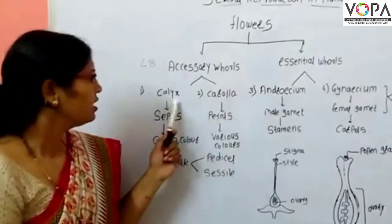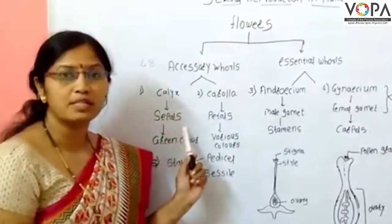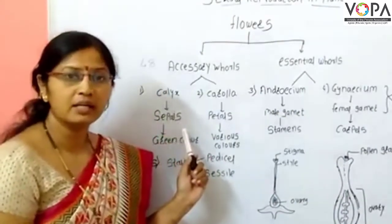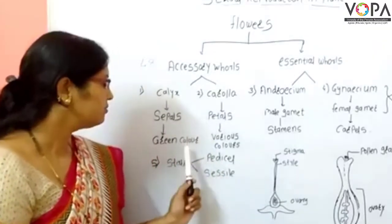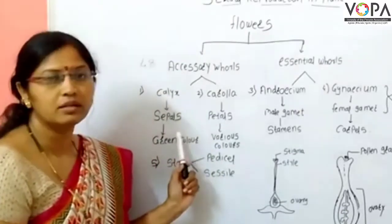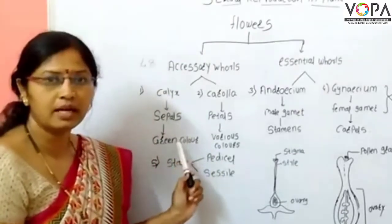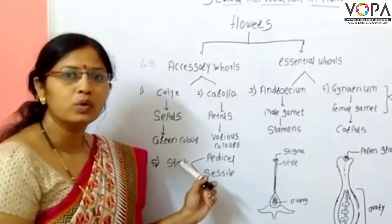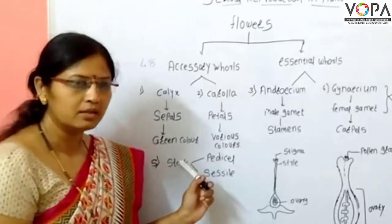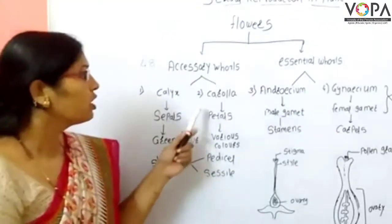Calyx consists of sepals. They are green in color and present above the pedicel.